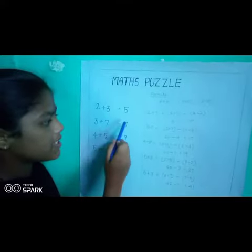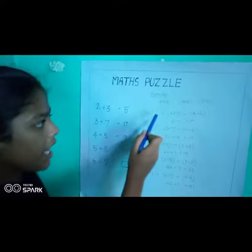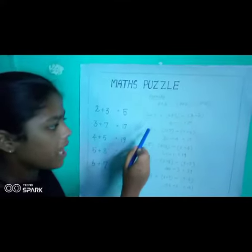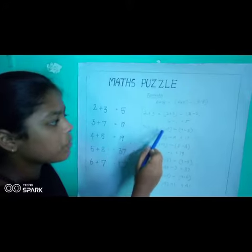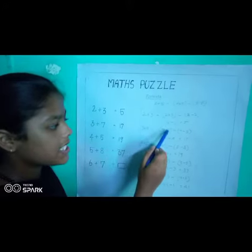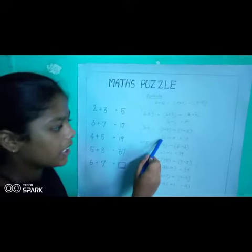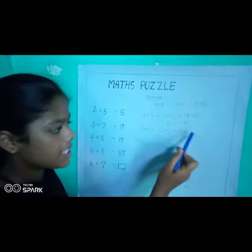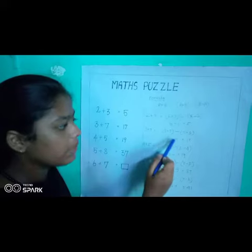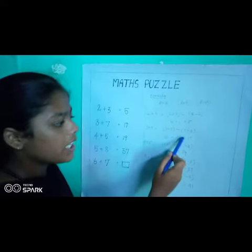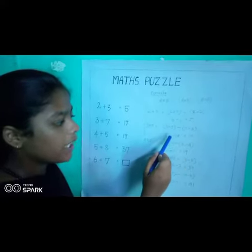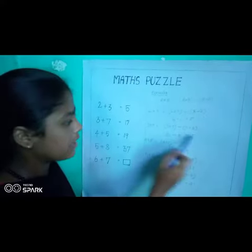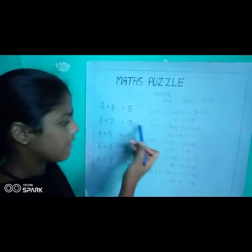3 plus 7 equal to 17. A value is 3 and B value is 7. 3 into 7 equal to 21, minus 7, minus 3, equal to 4. 21 minus 4 equal to 17. So the answer is 17.